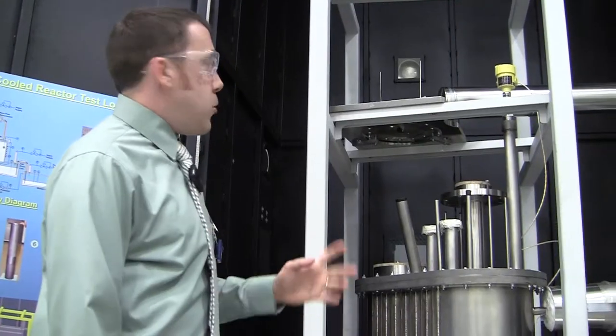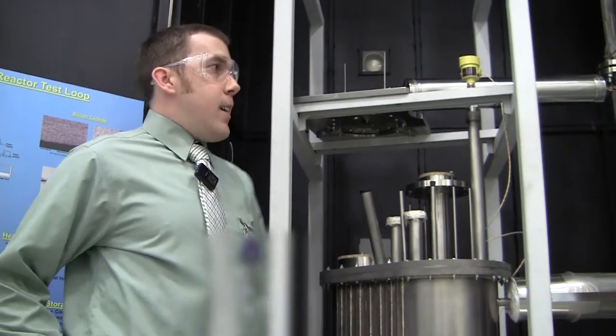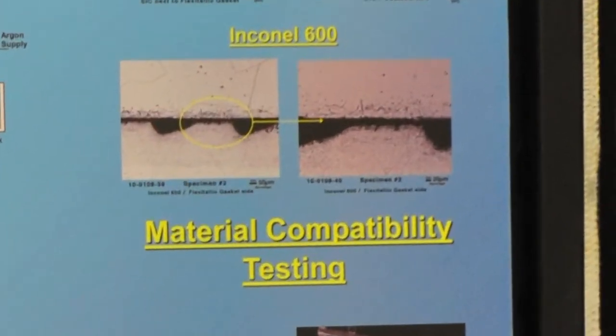Above about 600C, it becomes technologically very difficult to transfer heat effectively. The loop is designed to run at 700 Celsius, that's about 1,300 degrees Fahrenheit. And the whole loop is made out of Inconel 600.